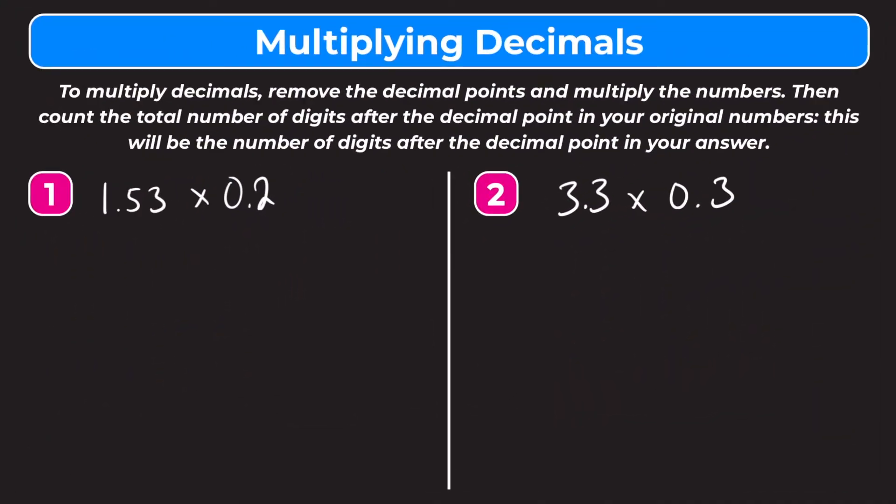In today's video we're going to learn how to multiply a decimal times a decimal. In order to do this we have to follow a couple steps. The first step is to remove the decimal points from your original numbers. Then you multiply those numbers as you would regular whole numbers. When you have your answer, you have to count how many places were to the right of the decimal point in your original numbers, and that will be the number of digits that have to be to the right of the decimal in your answer.